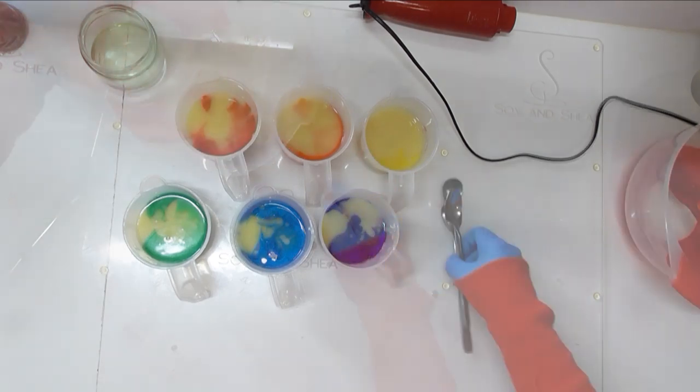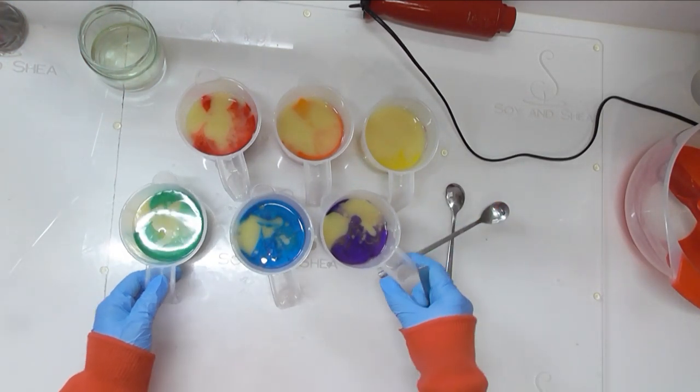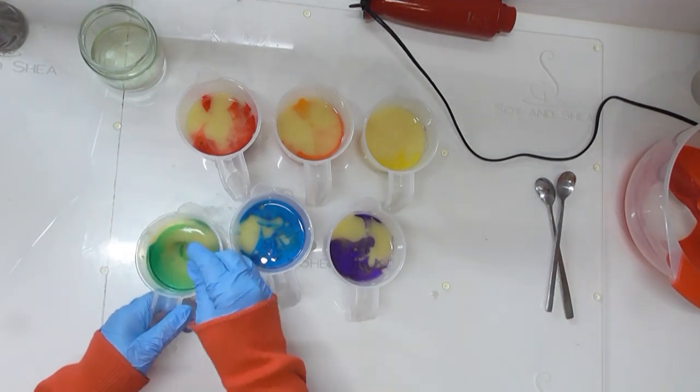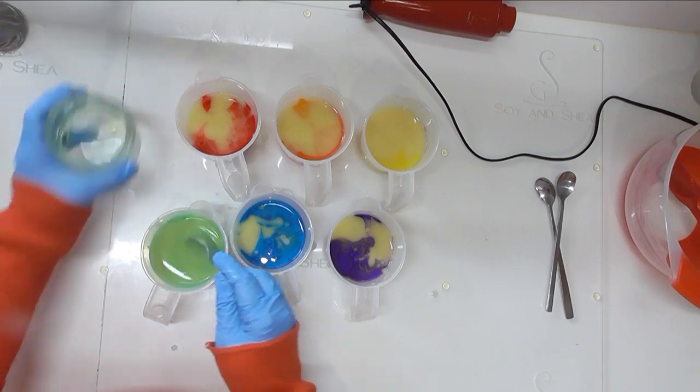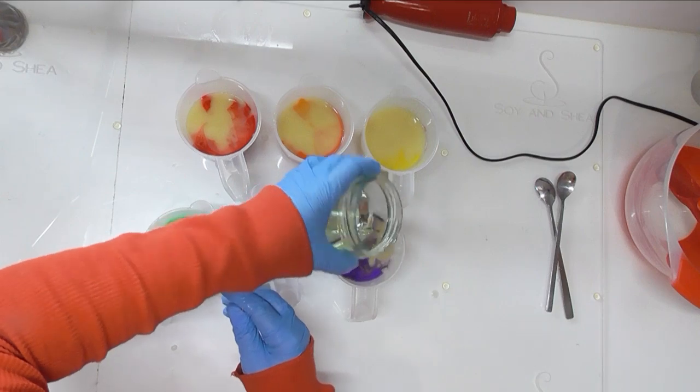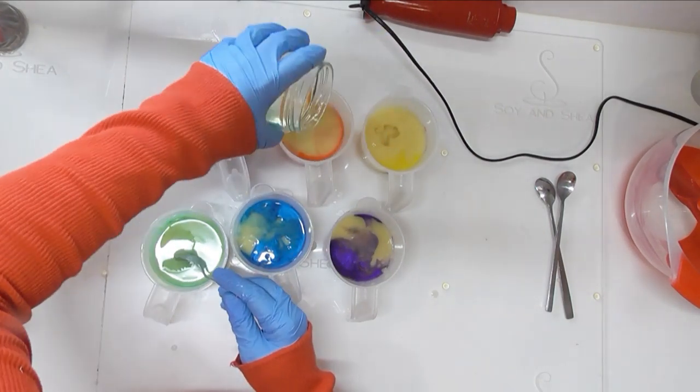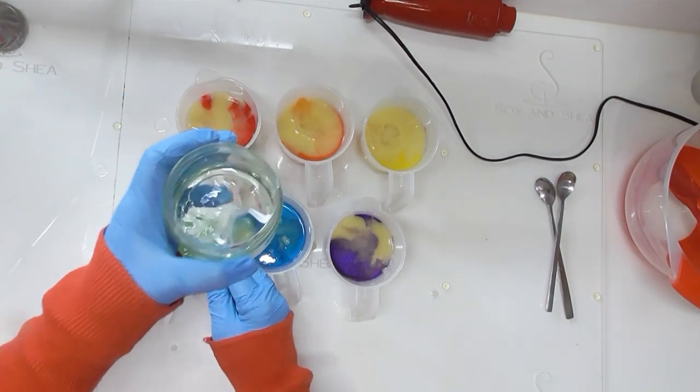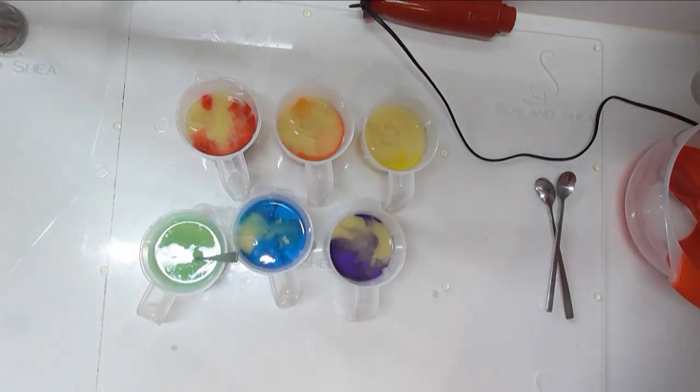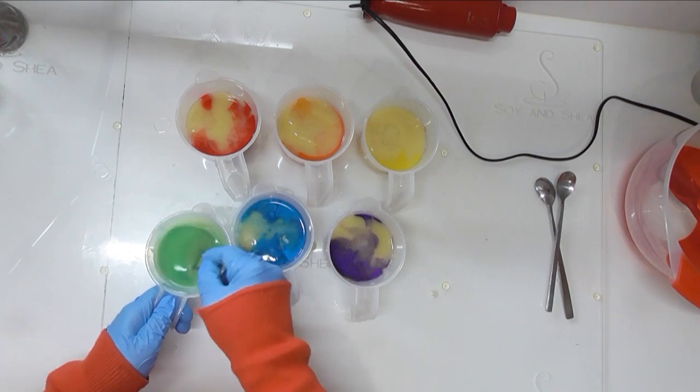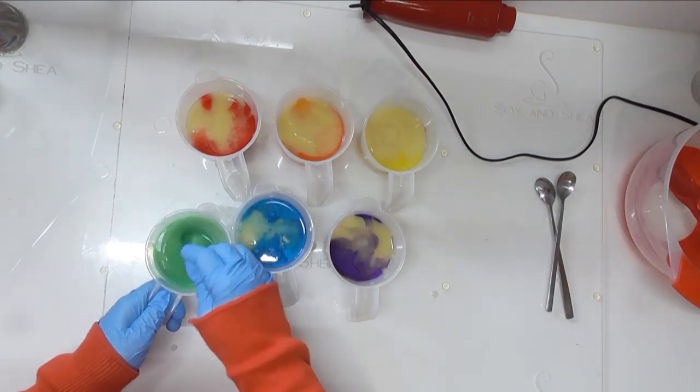All right so I'm actually going to use stainless steel teaspoons to mix these just because I find it easier to do. So I'm going to start down at my green, we will add in just a little bit of fragrance into all of these, making sure I save enough for that final layer which I do. So I'm just going to pop that into my black mainly so I don't forget to add that in at the end. I'm going to get all of these stirred in and then we'll grab the mold and get to pouring.